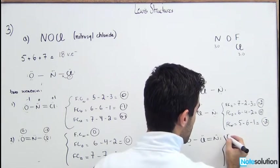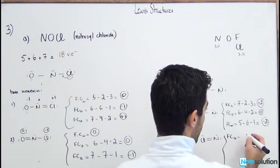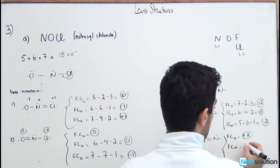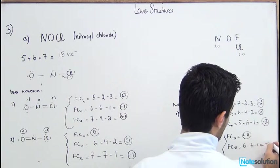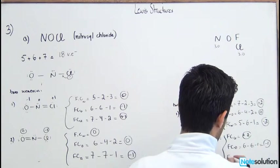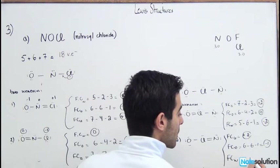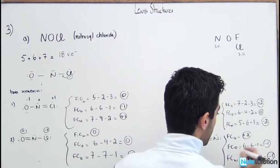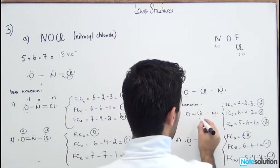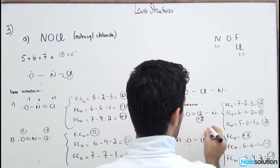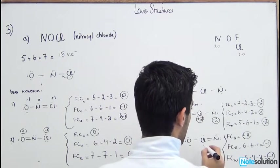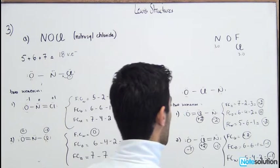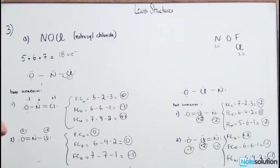For the second Cl-in-the-middle scenario: Cl still has FC = +2. O: 6 − 6 − 1 = −1. N: 5 − 4 − 2 = −1. So we have formal charges of +2, −1, −1. In total, the four scenarios give: (0, −1, +1), (0, 0, −1), (+2, 0, −2), and (+2, −1, −1).